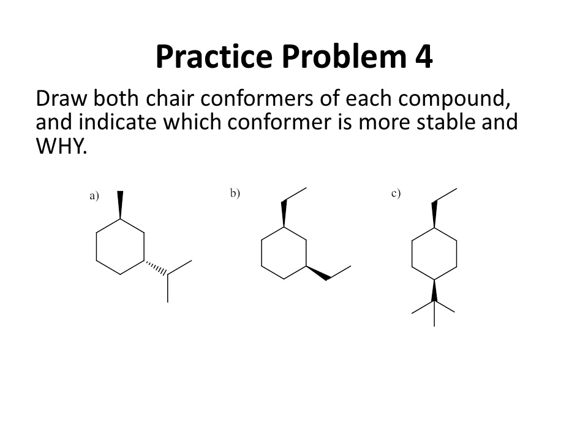Practice Problem 4: Draw both chair conformers of each compound and indicate which conformer is more stable and why. The most stable conformer is the one with the least amount of steric strain, meaning the least amount of 1,3-diaxial interaction. Pause the video to work on the practice problem.